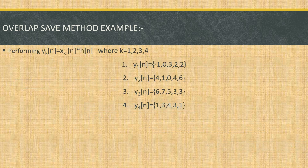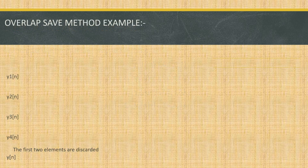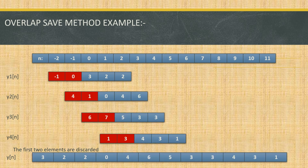Next, we perform the convolution of the input signal and the impulse response: yk(n) = xk(n) * h(n), for k = 1, 2, 3, 4. This gives us y1(n), y2(n), y3(n), and y4(n). Since M = 3 and M-1 = 2, the first two elements of each output block are discarded and the rest are fitted together to give the overall output sequence: y(n) = {-3, -2, -2, 0, 4, 6, 5, 3, 3, 4, 3, 1}. Thank you.